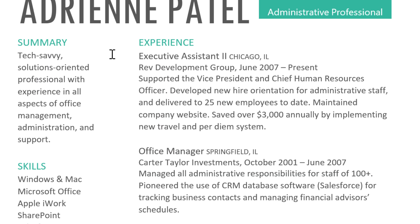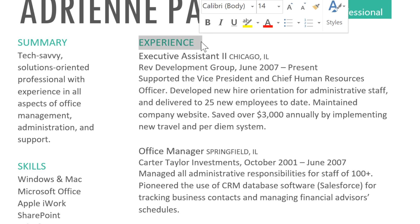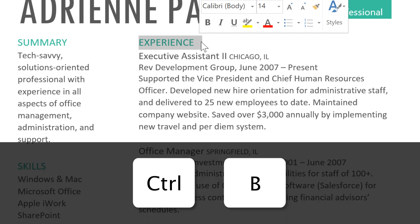With the help of a few keyboard shortcuts, you can quickly make text bold, italic, and underlined. To make text bold, select the words you'd like to format, then press Ctrl-B on your keyboard.